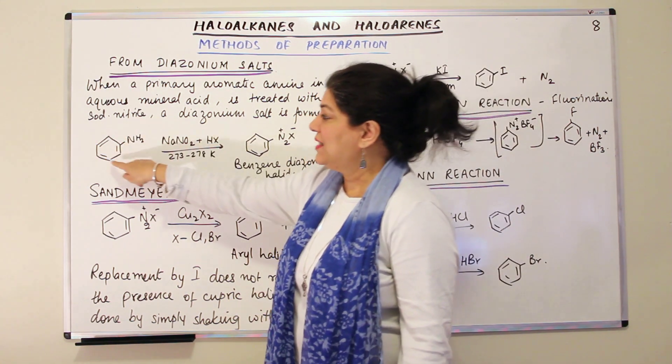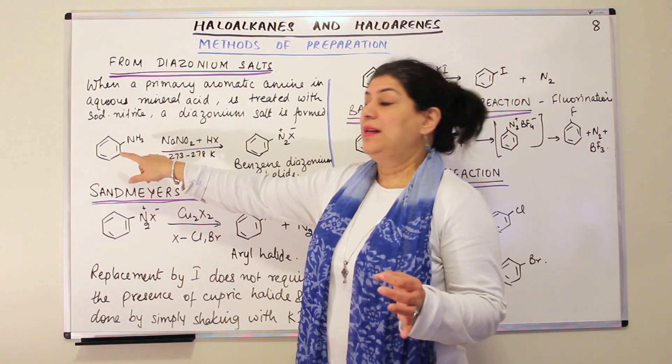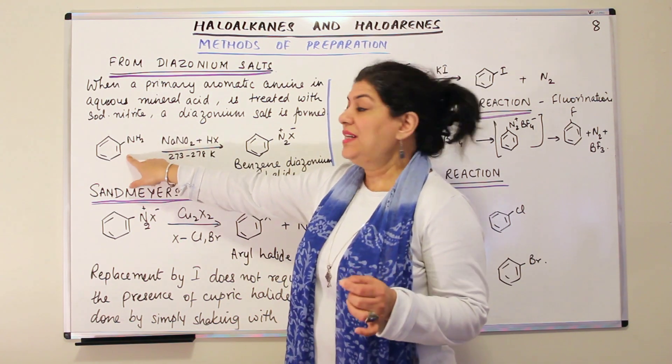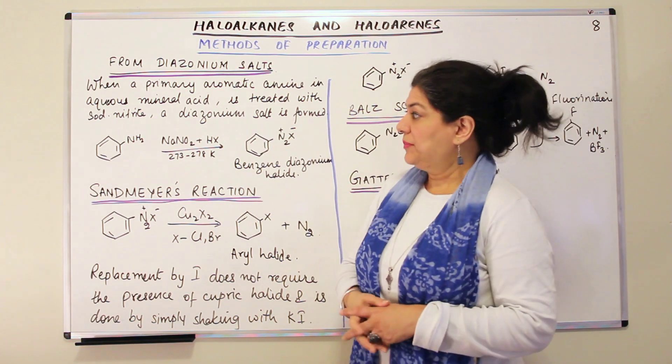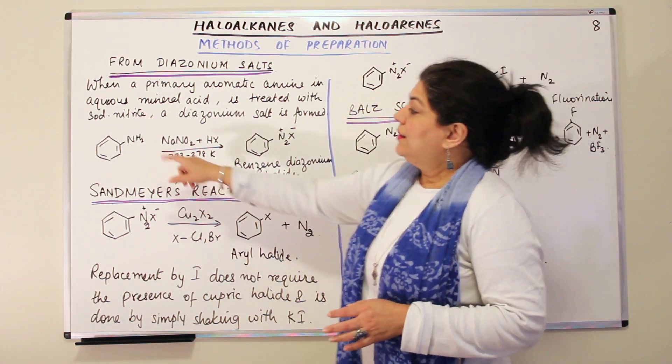When it is treated, when an amine, a primary amine is treated with this, it results in the formation of a diazonium salt.